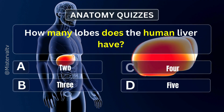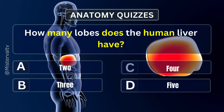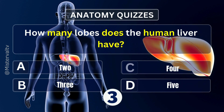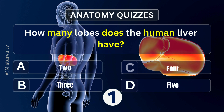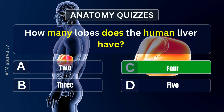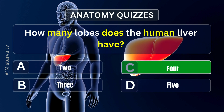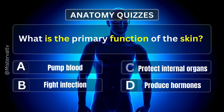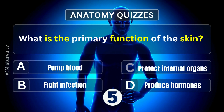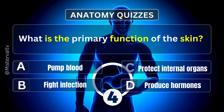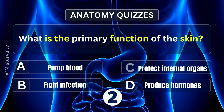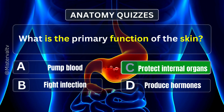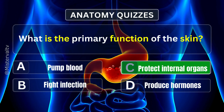How many lobes does the human liver have? Answer. C. 4. What is the primary function of the skin? Answer. C. Protect internal organs.